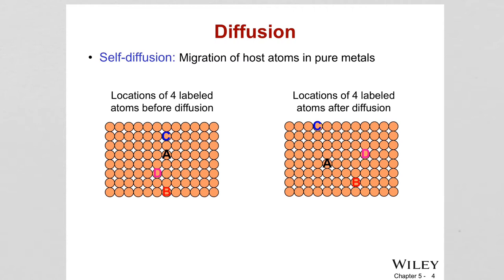Since all atoms are the same in self-diffusion, we label them A, B, C, D. When diffusion takes place, all those atoms end up in different places. The material looks the same to you, but those atoms have actually moved along inside the material.